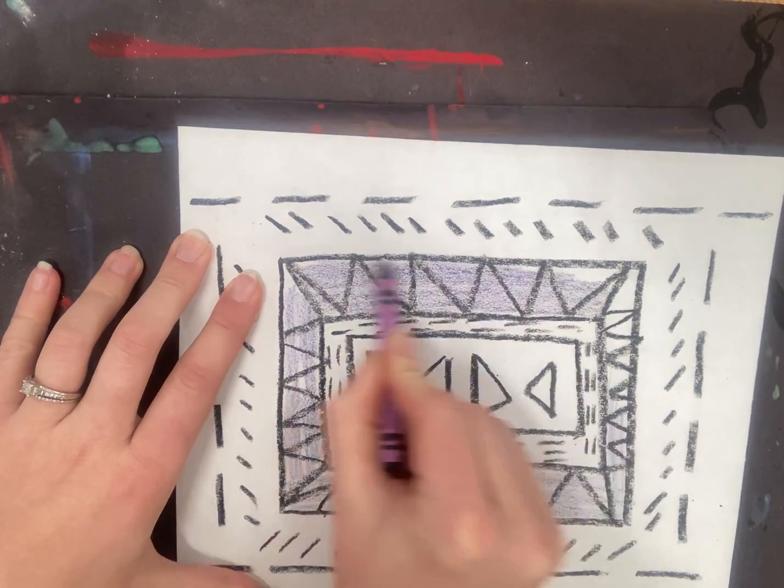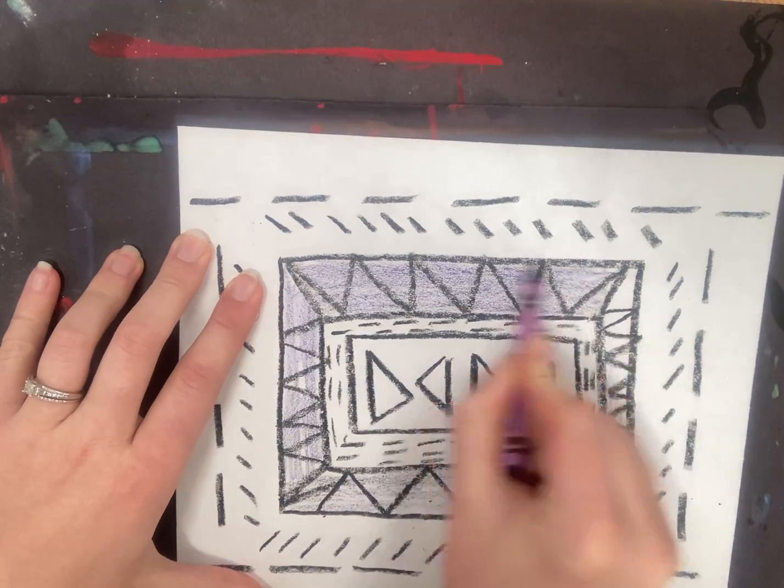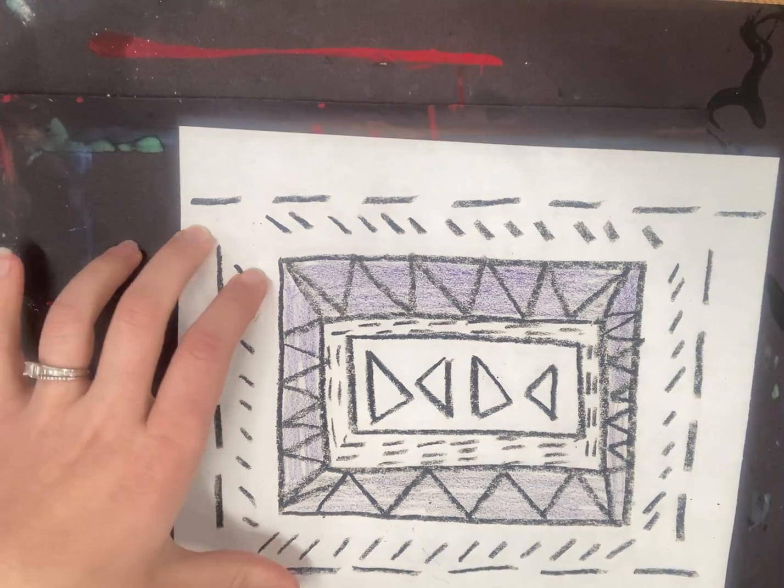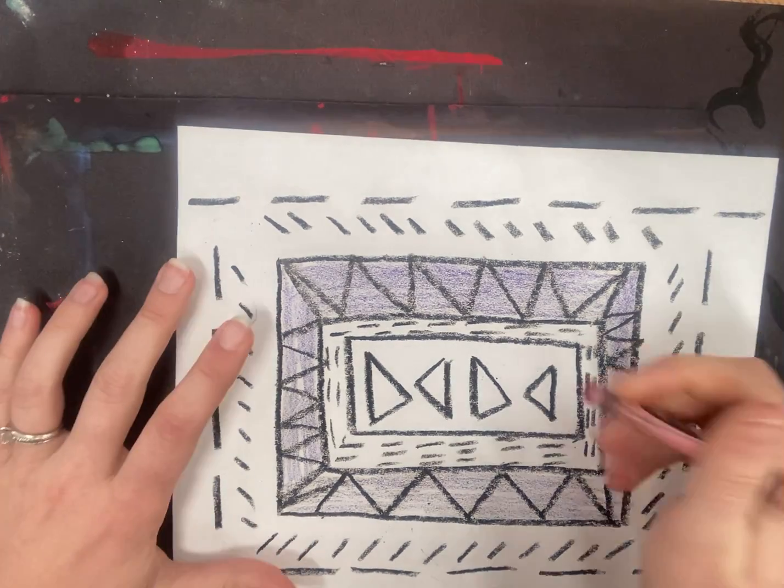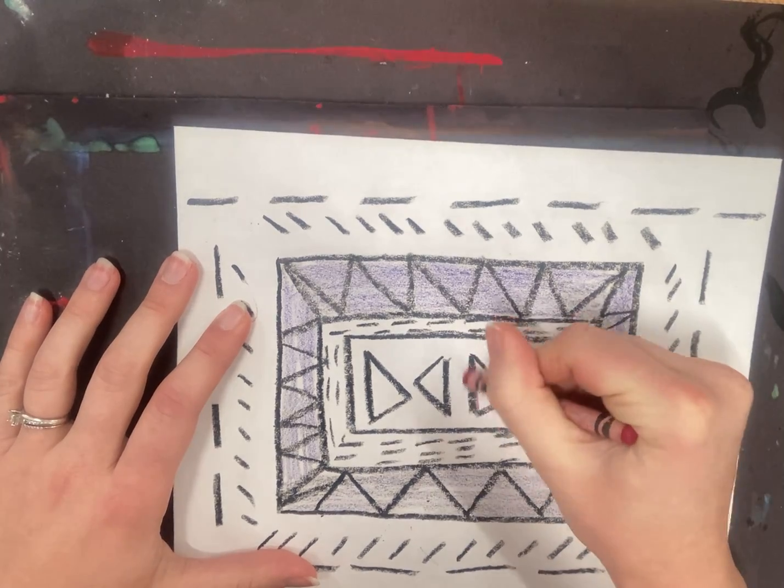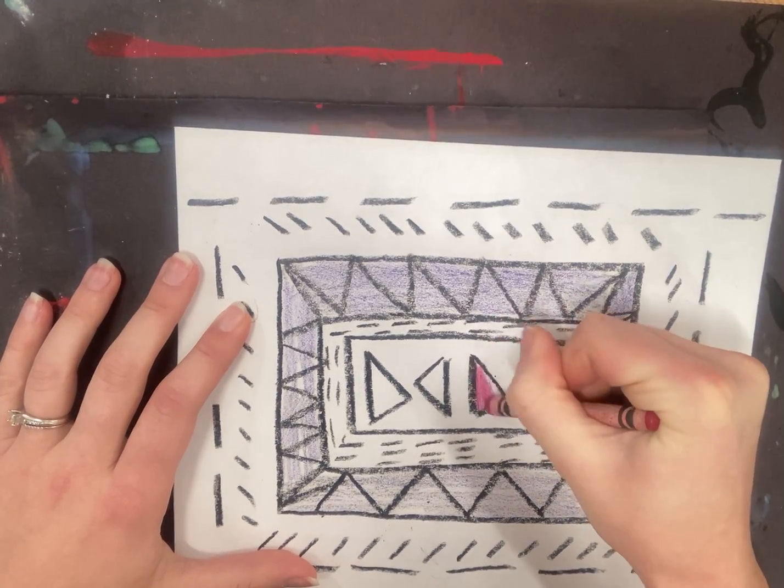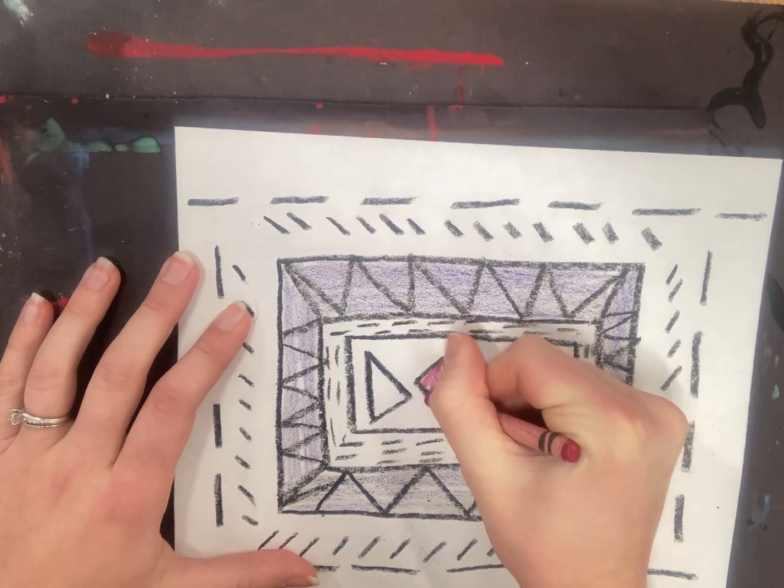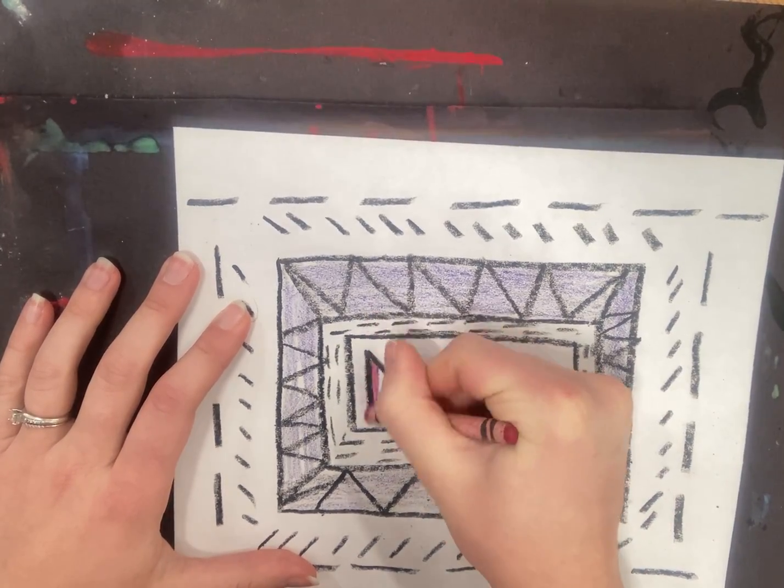And think about where you are putting your color. We're not scribble-scrabbling. Try to keep it organized. You can create different patterns with different colors. Of course, you can leave some white if you want to. I always start with black because it's a nice neutral color on this white construction paper.